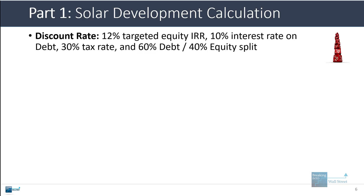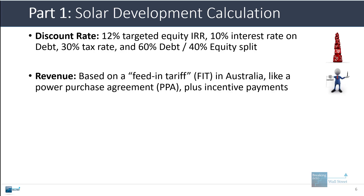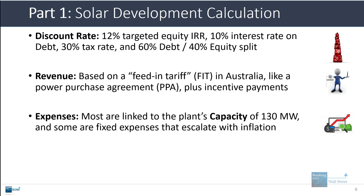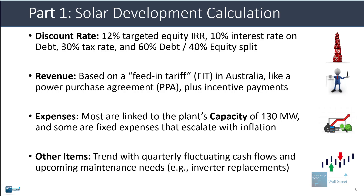In the solar development calculation, I lay out some of the assumptions for the discount rate. For the revenue, this is based on a feed-in tariff in Australia, which is sort of like a power purchase agreement, and there are also some incentive payments for certain production levels. The expenses are mostly based on the plant's capacity of 130 megawatts — some are fixed expenses that escalate with inflation, and items like reserve contributions and withdrawals tend to trend with the fluctuating cash flows each quarter. Maintenance CapEx will depend on upcoming maintenance needs, like replacing the inverters on the solar panels.